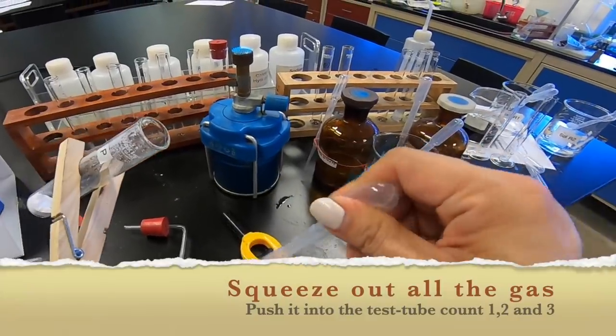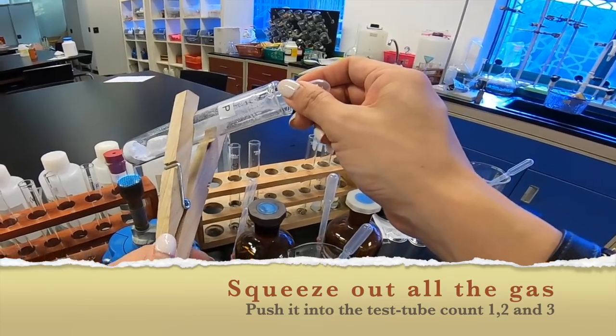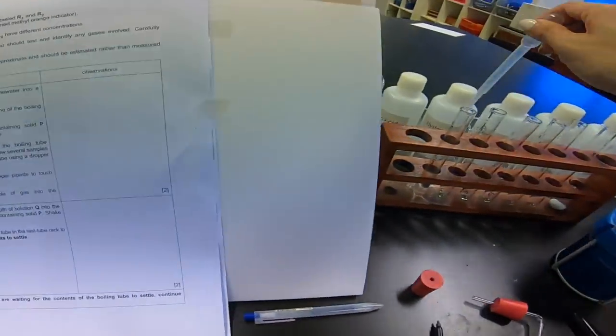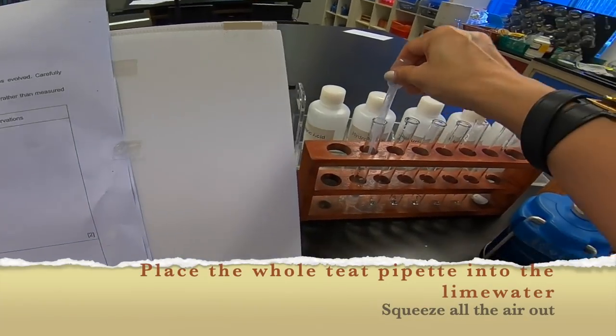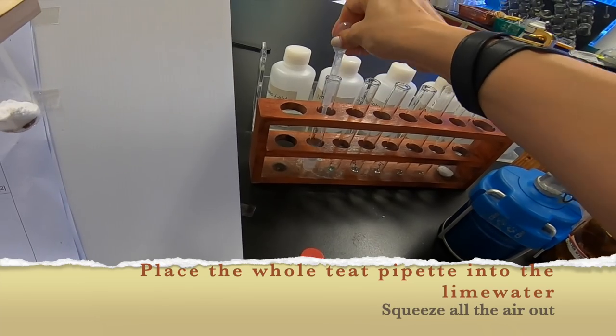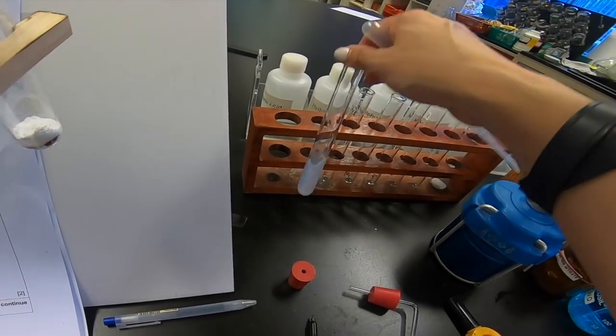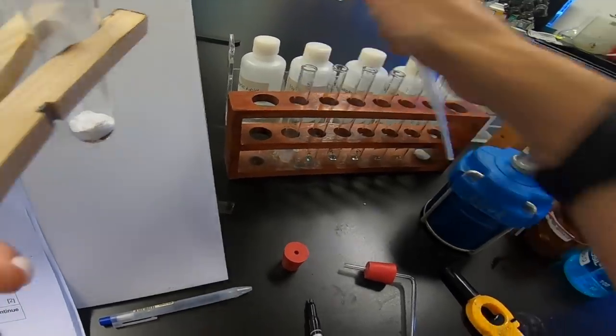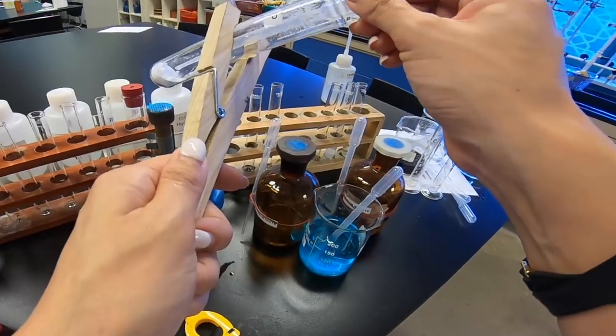Now, this is the teat pipette. Squeeze out all the gas. And then, as you heat, bring this inside. We count 1,000, 2,000, 3,000. Take it out. Put it right inside our lime water. This thing must go through the lime water and bubble through it. I already see a slight... Can you see that it's already turned?